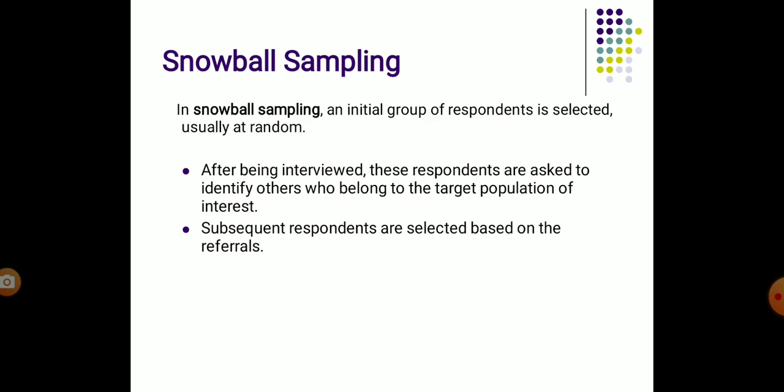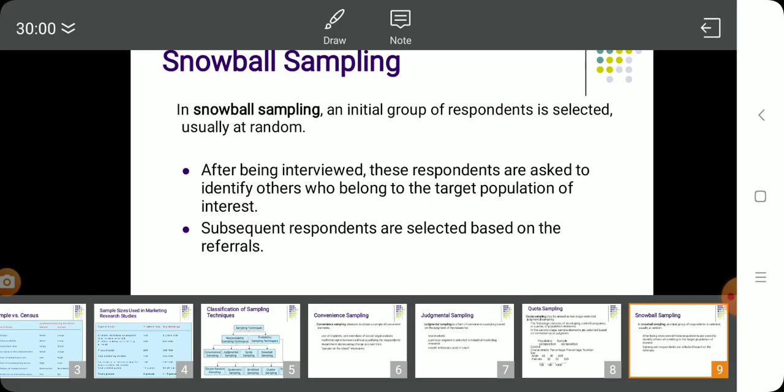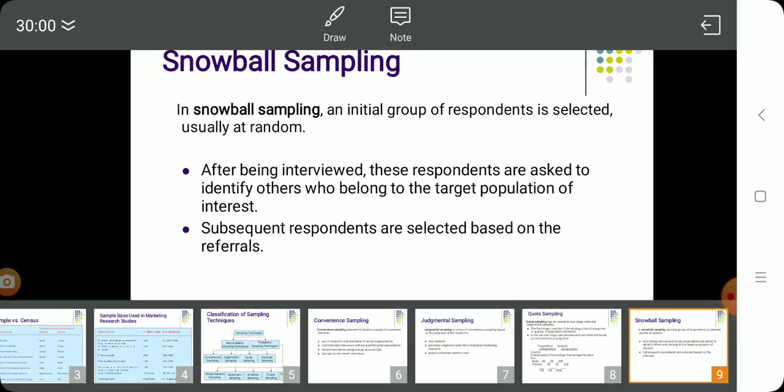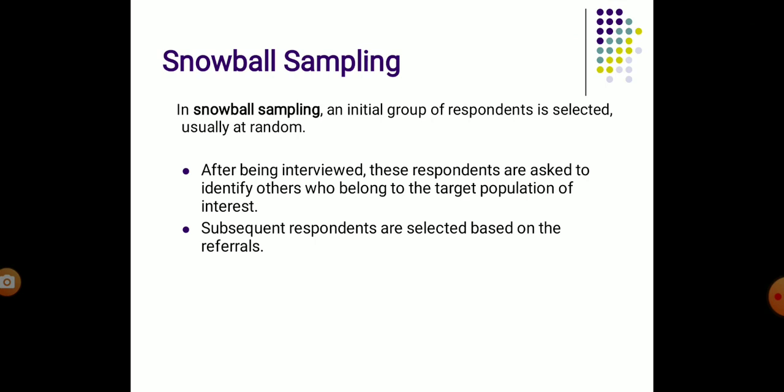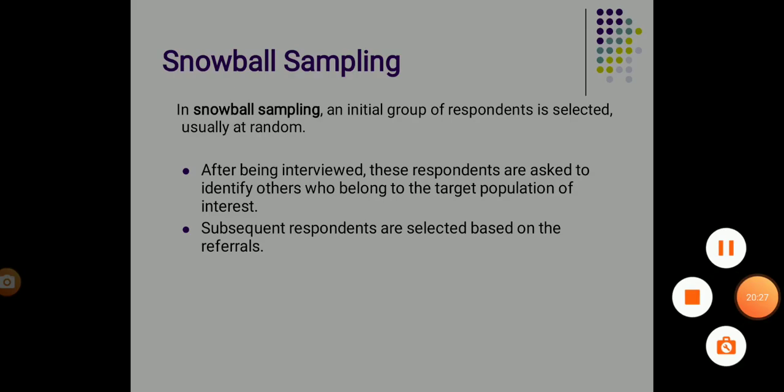In this session, we discussed the four methods of non-probability sampling: convenience sampling, judgmental sampling, quota sampling, and snowball sampling. These are all the four methods of non-probability sampling.